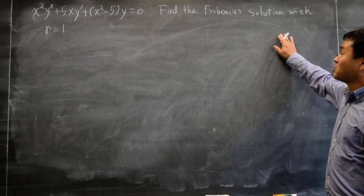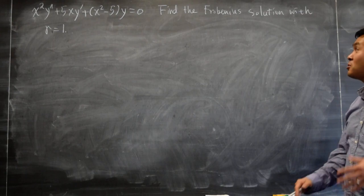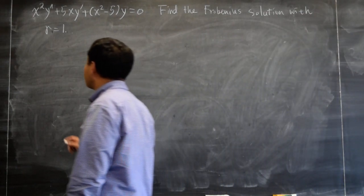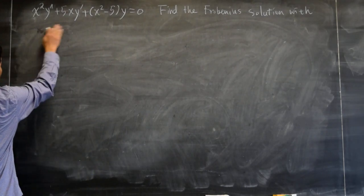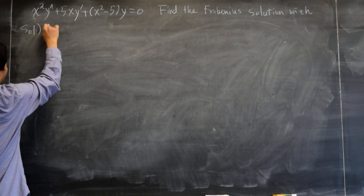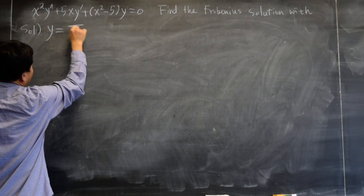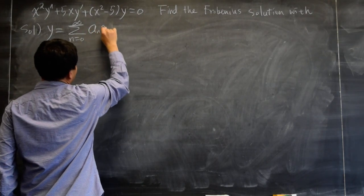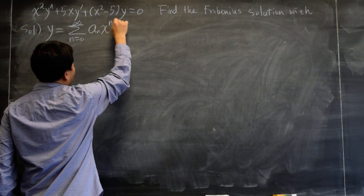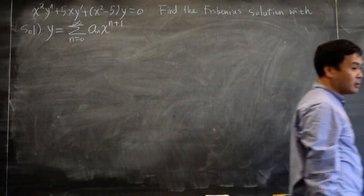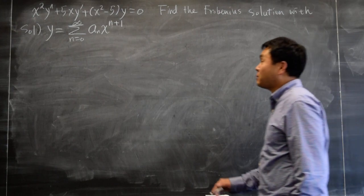So this could be one of the ways where you're asked to find a Frobenius solution for r equals to n. So let's try this. So if r is equal to 1, you're saying y is sigma n from 0 to infinity of an, actually n plus r, but r is equal to 1. That's what it is. That's the Frobenius type.